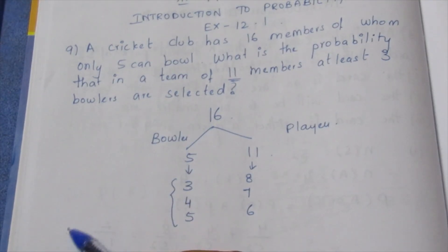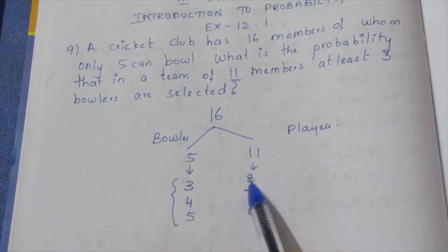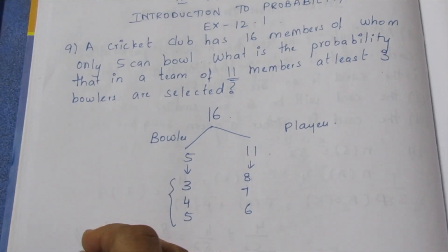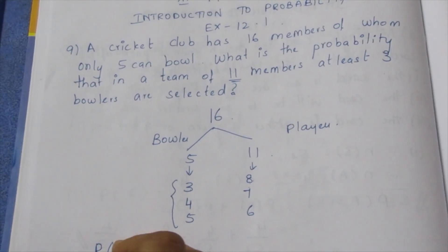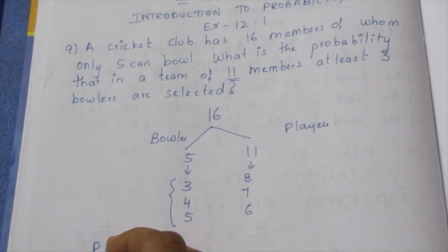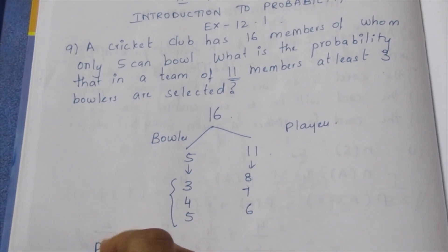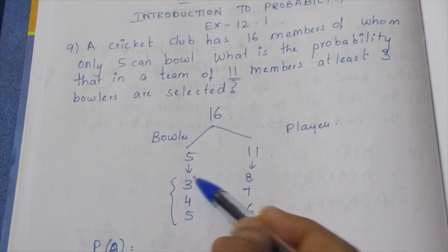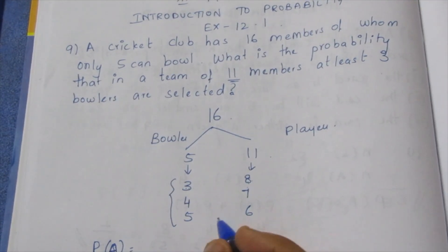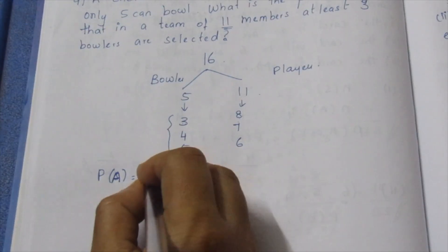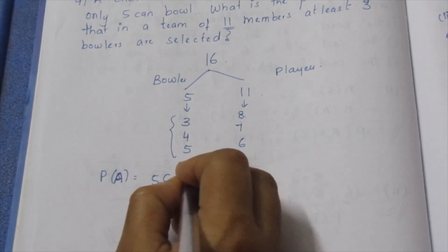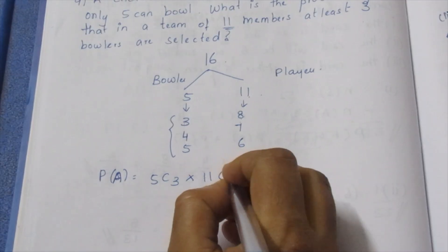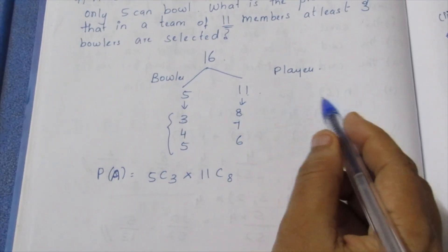When 3 bowlers are selected, the balance is filled by the remaining players. The probability of selection is P(A). Case 1: 5C3 bowlers, and 11 members minus 3 gives 8 remaining players from the non-bowlers.